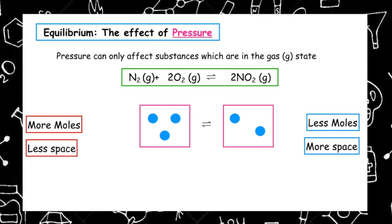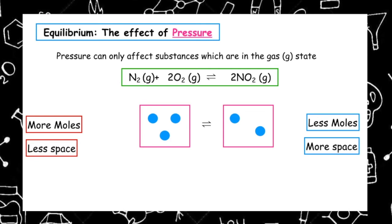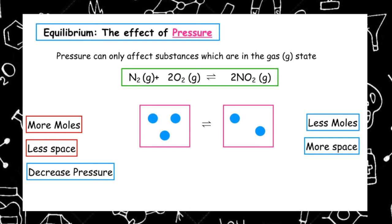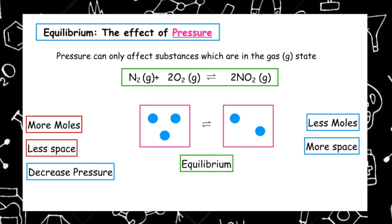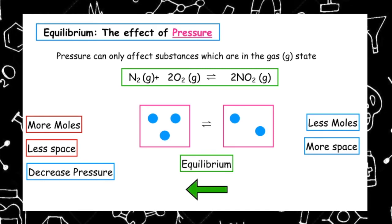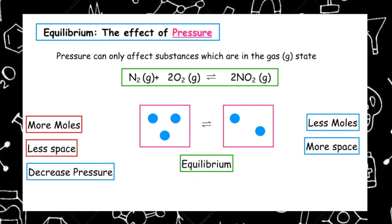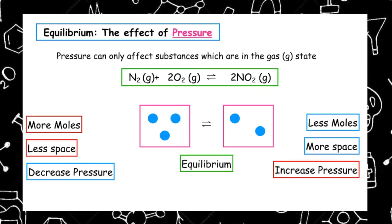The story I use to remember this is to think about a headache. When I've got a headache, I've got a lot of pressure — represented pictorially by the reactant side, with lots of particles squeezed into a smaller space. I don't like a headache, so I want to decrease the pressure, which moves the equilibrium to the left. However, if I wanted to make more product and shift the equilibrium to the right, I would do the opposite and increase the pressure.